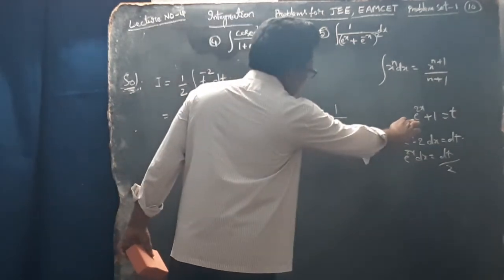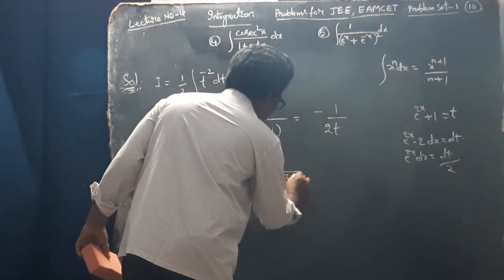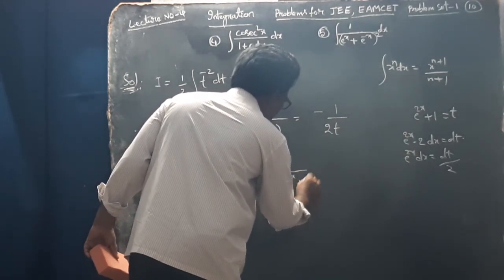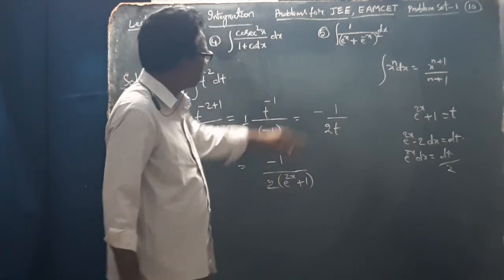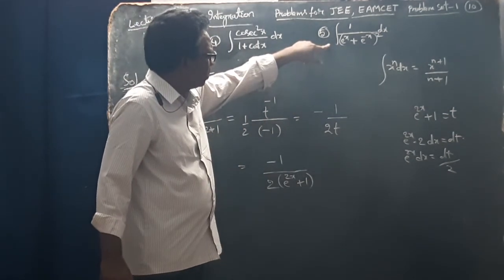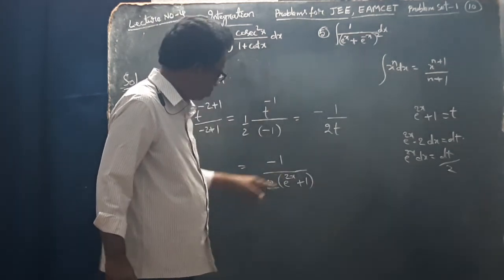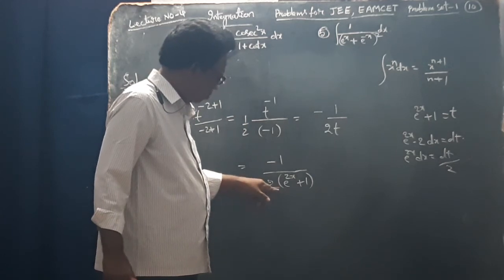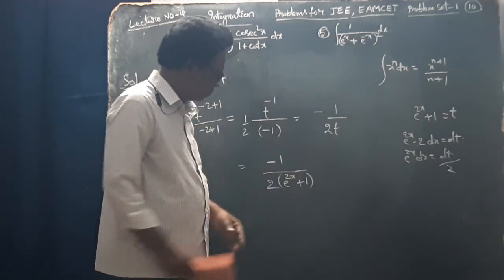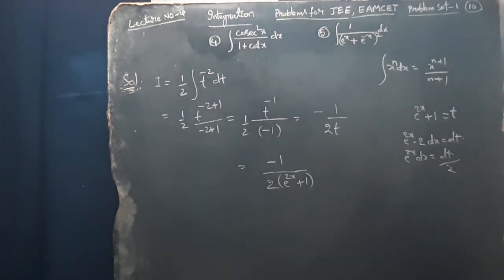Substituting back, t means e power 2x plus 1. So the required integral of 1 by e power x plus e power minus x whole square dx equals minus 1 by 2 into e power 2x plus 1. Thank you.